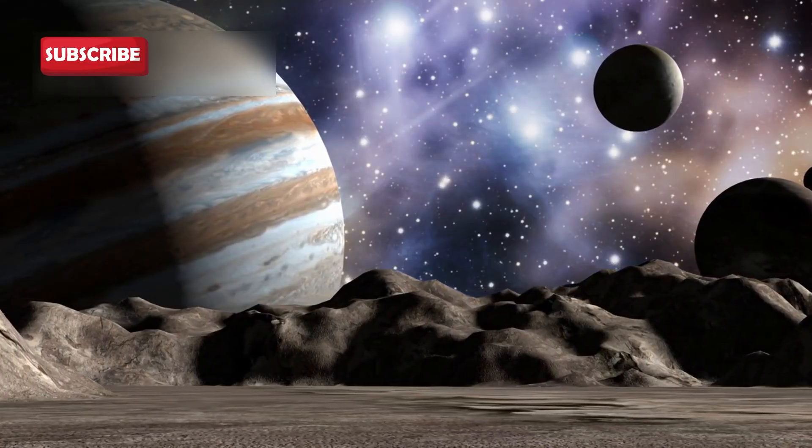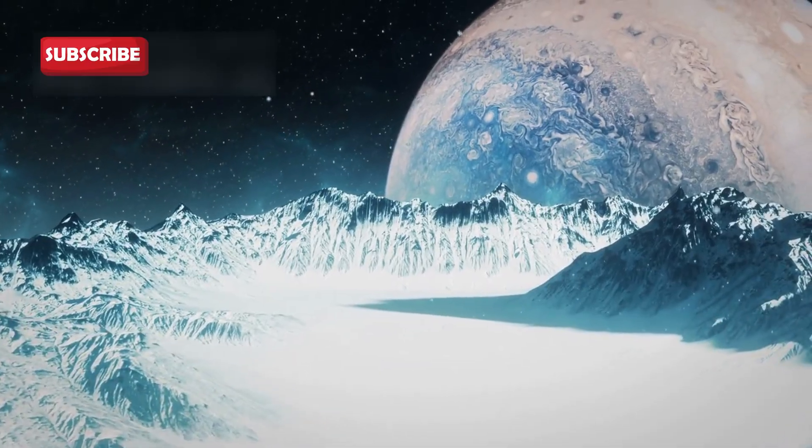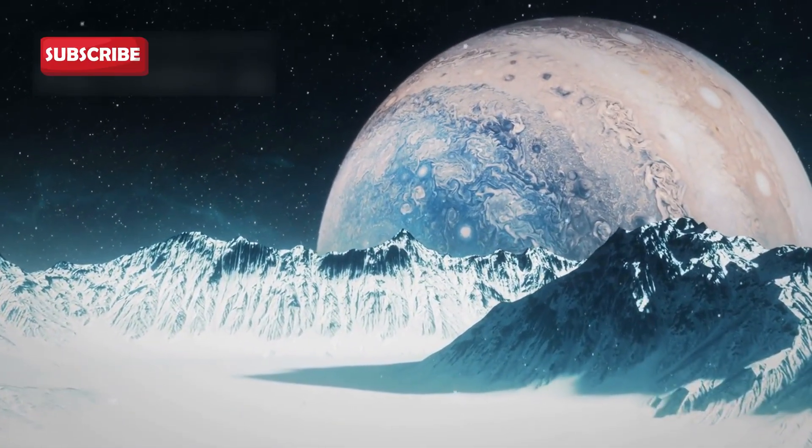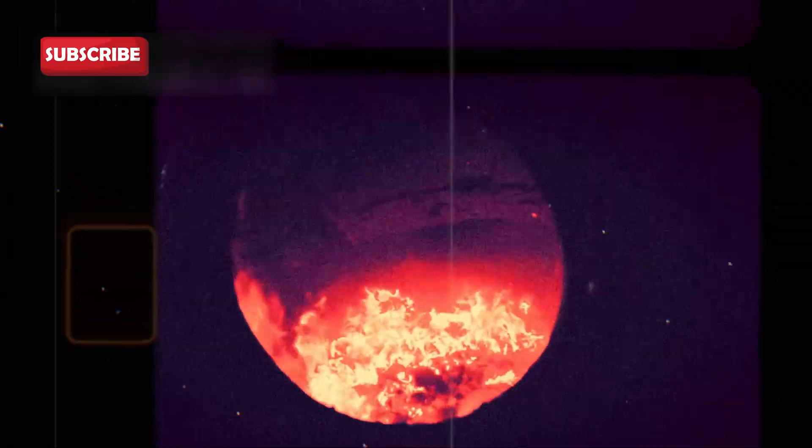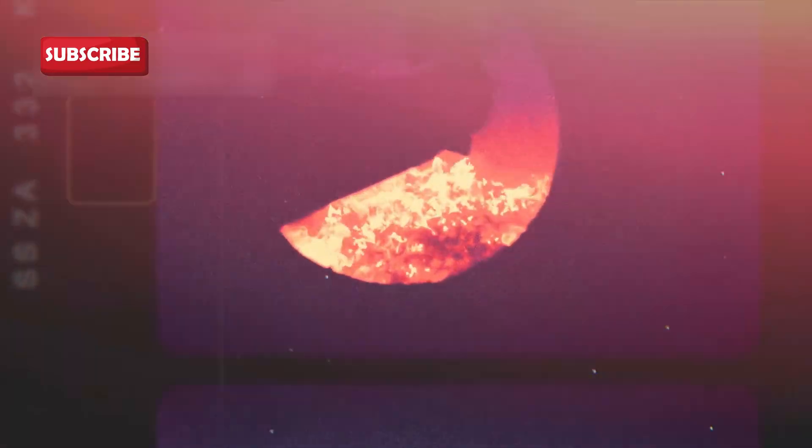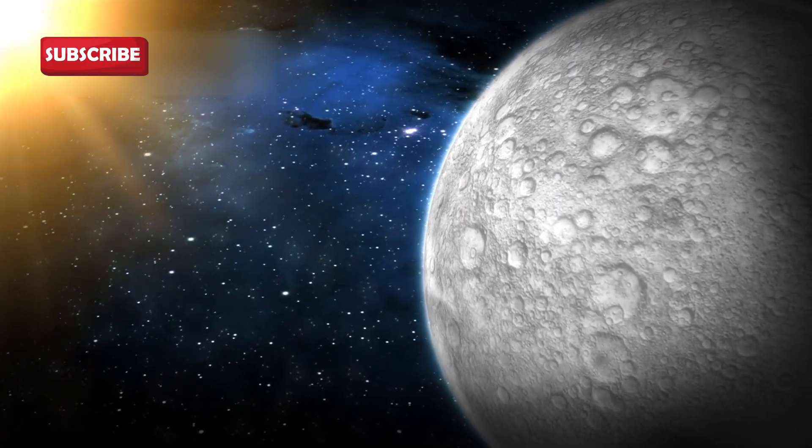The first major shock came at Jupiter. Scientists were stunned when Voyager discovered that Io, one of Jupiter's moons, had active volcanoes. This was the first time volcanic activity had ever been observed beyond Earth. It completely changed the belief that distant moons were dead and lifeless.